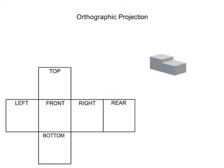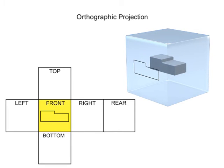Each side of the object gets projected onto the wall of the box. That projection is then shown as its own view on a two-dimensional drawing.